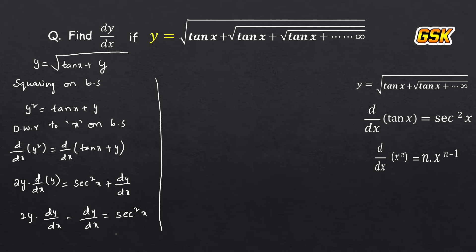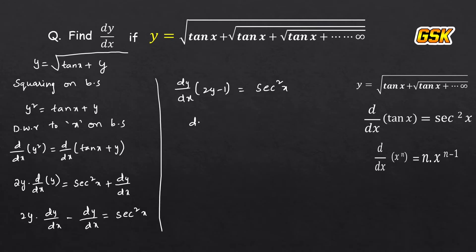Taking dy by dx as common: dy by dx into (2y minus 1) equals sec squared x. Transposing (2y minus 1) to the right-hand side by dividing, we get dy by dx equals sec squared x divided by (2y minus 1).